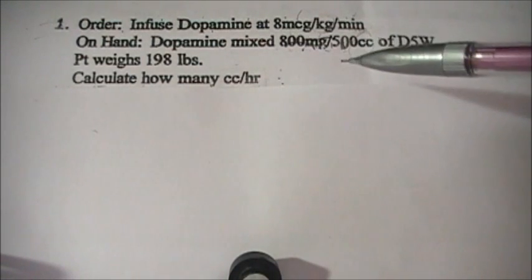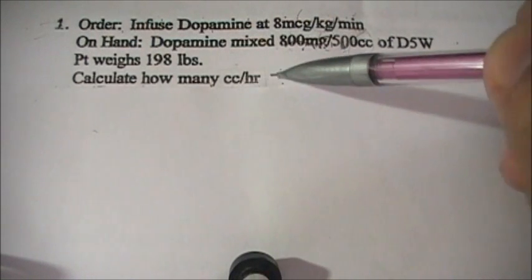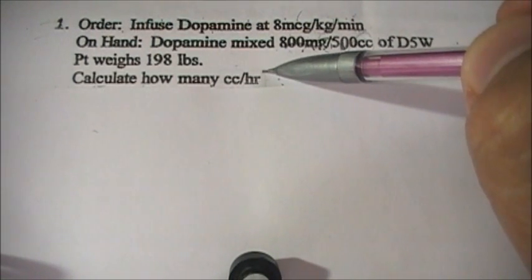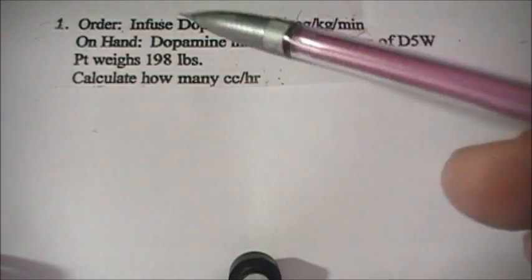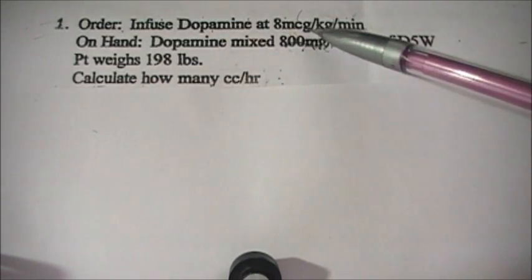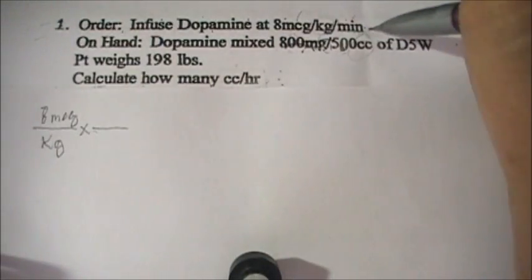When you're starting to calculate medications, you have to first identify what you are looking for — and this time you're looking for mL per hour. So we're going to label this: order to infuse dopamine at 8 micrograms per kilogram per minute. This is your doctor's order, so we write 8 mcg in the numerator, per kilogram, and per minute — with minutes as the denominator.